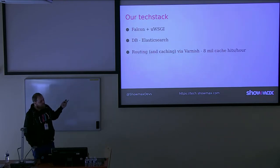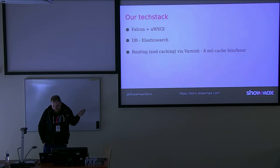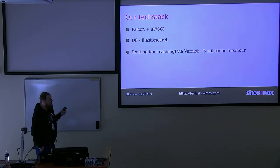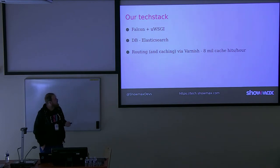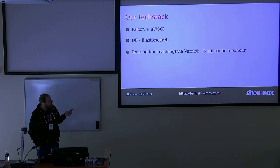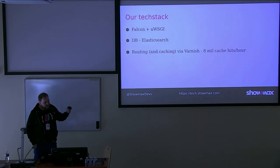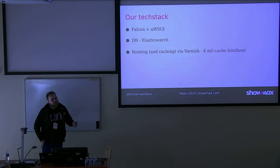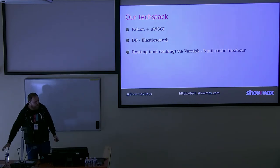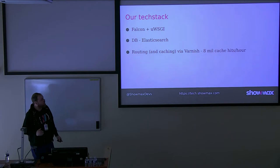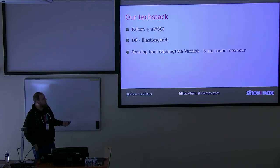We went with Falcon as our API framework — quite light, powerful, easy to write, a great thing. We used Elasticsearch as our database and Varnish for routing and caching. Just a side note: caching can be quite important for us because in peak hours just one of our microservices serves about 8 million requests from cache.